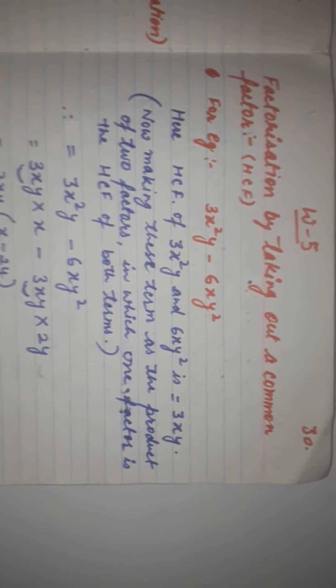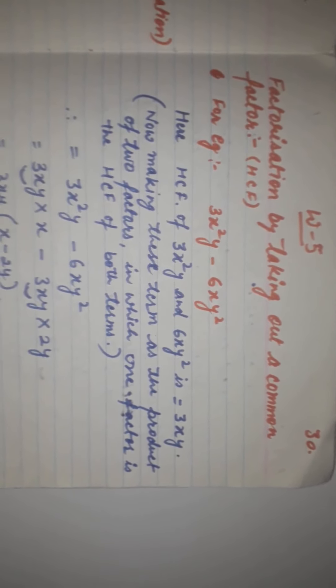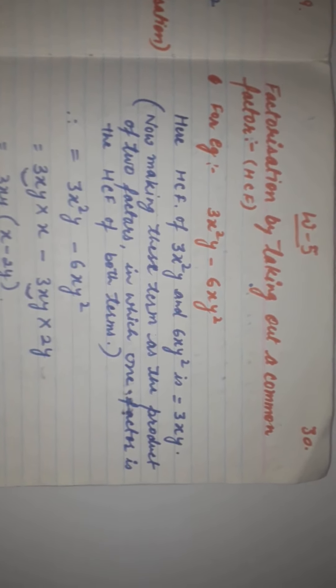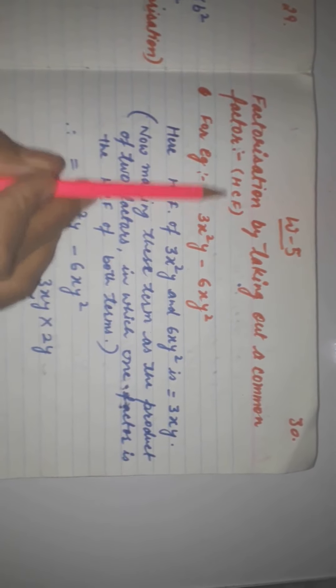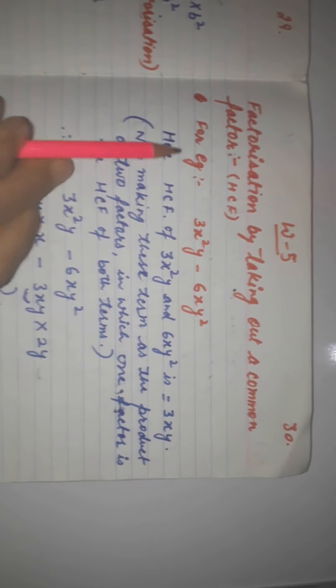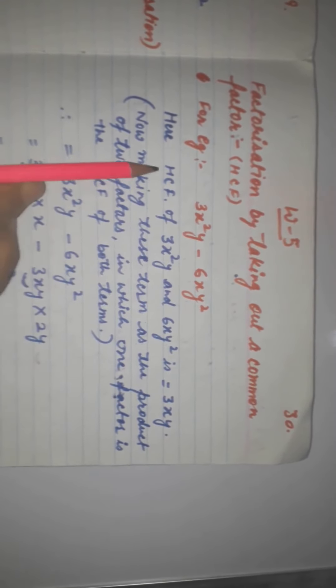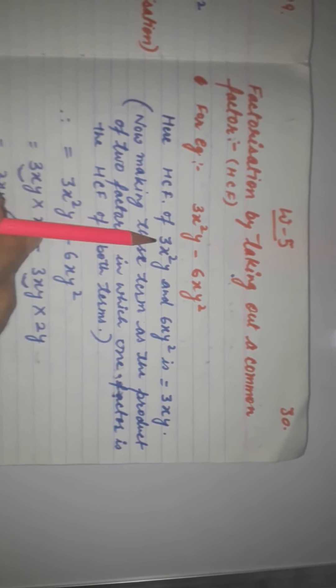Hello students, today we are going to discuss question number 3 of worksheet 5. In this case, factorization is done by taking out a common factor, that is the HCF. For example, there is given a binomial which has two terms: 3x² y minus 6xy².